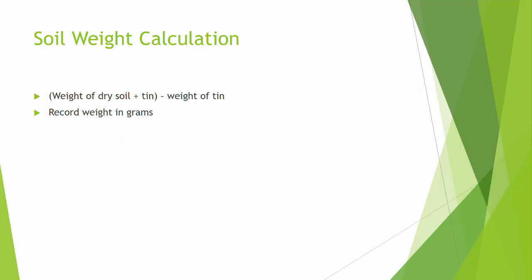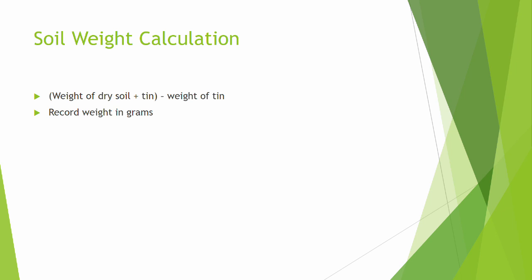In order to calculate the dry weight of the soil, take the weight of the tin filled with dry soil and subtract the empty weight of the tin. Record the soil weight in grams.